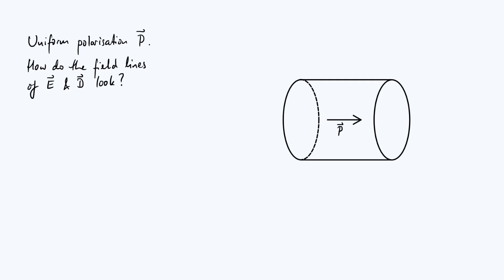It also illustrates how the standard relation D = εE doesn't always apply. In fact, you can have your electric field and your displacement field pointing in almost opposite directions. The displacement field is actually a little bit easier to understand, so we're going to start by sketching field lines of D, using some important equations relating to it.